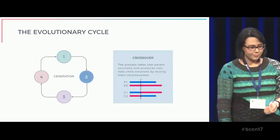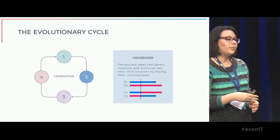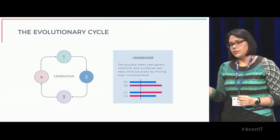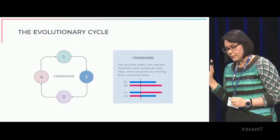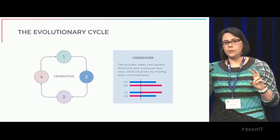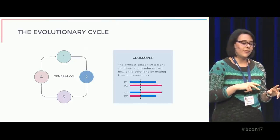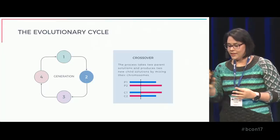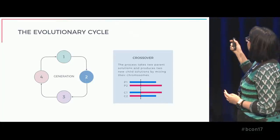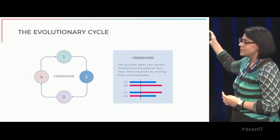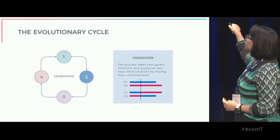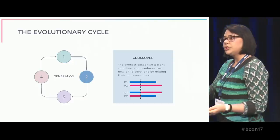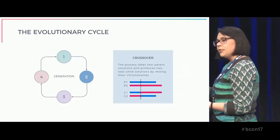The next step is to generate from the mating pool a new population of solutions. It is done by applying two different genetic operators. The first one is the crossover. A pair of parent solutions is selected from the mating pool, and a couple of new child solutions is generated by mixing the chromosomes of the parents. The process selects a cutting point in the parents' chromosomes, and all the data beyond that point are swapped between the parents, rendering the new child solutions. In this way, each new solution shares the information of both of its parents.